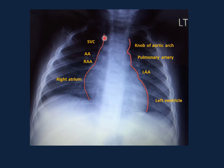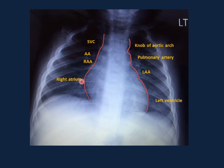The next step is to evaluate the contours of the heart. On the left border from top down: the aortic arch nub, pulmonary artery, left atrial appendage, and left ventricle. On the right side from top down: superior vena cava, ascending aorta, right atrial appendage, and right atrium. Then we look at the vascularity of the lungs — whether it is normal, diminished, or prominent. Prominent vascularity with cardiomegaly is indicative of a left-to-right shunt.